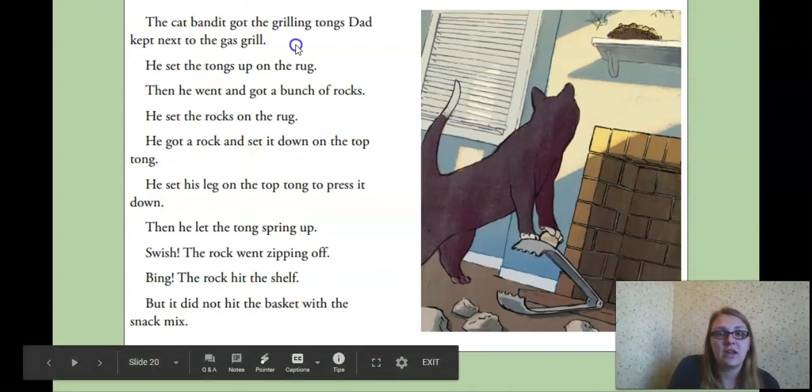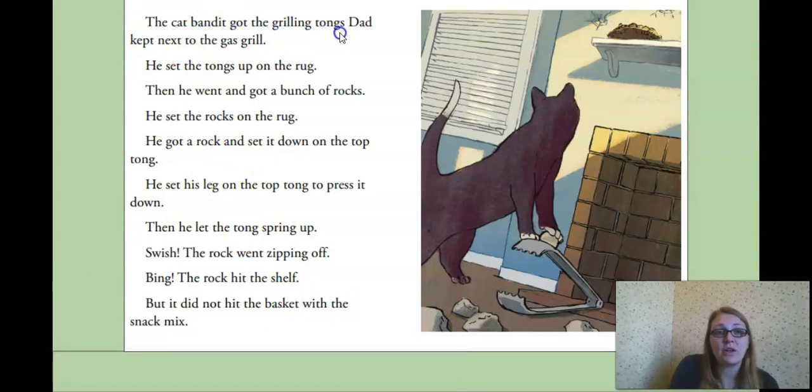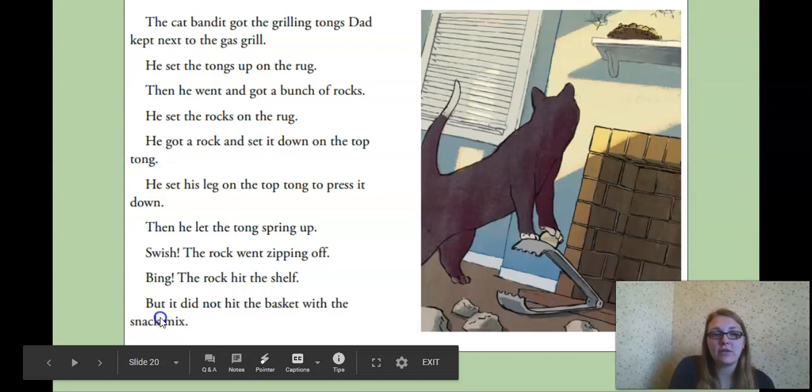Let's read that again. See if we get all the details. The cat bandit got the grilling tongs Dad kept next to the gas grill. He set the tongs up on the rug. Then he went and got a bunch of rocks. He set the rocks on the rug. He got a rock and set it down on the top tong. He set his leg on the top tong to press it down. Then he let the tong spring up. Swish! The rock went zipping off. Bing! The rock hit the shelf. But it did not hit the basket with the snack mix.